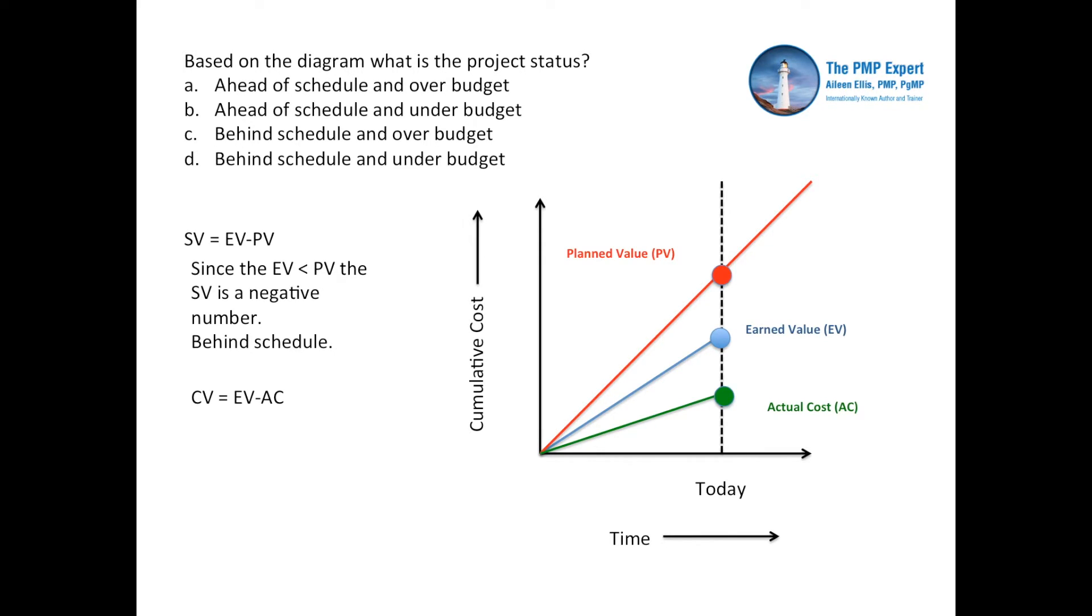Let's now think about cost variance. Cost variance equals EV minus AC. When we look at the diagram, we can see that the EV is greater than the AC. This means that the cost variance is a positive number. Positive numbers are good in the earned value system. This means we are under budget.